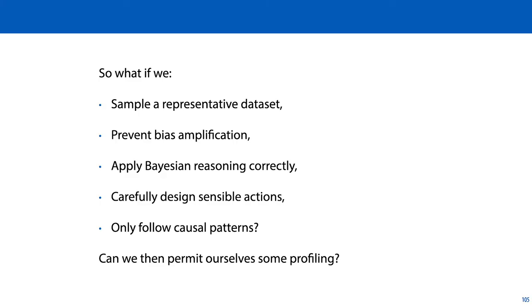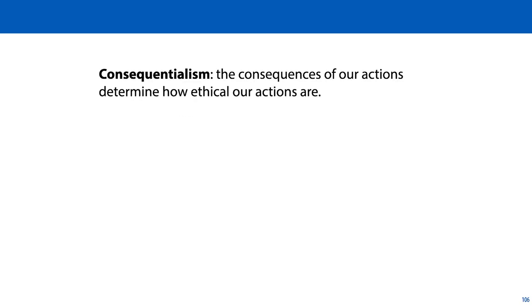So let's take one final look at our question, including everything we've learned so far. Say we somehow get a representative data set, which is difficult. We somehow prevent bias amplification, which may be impossible. We apply Bayesian reasoning correctly, which is possible. And we carefully design sensible actions based on some quantification of cost, which is very difficult. And we take care to consider all causal relations to avoid inadvertent costs and feedback loops, which is difficult at best. Imagine a world where we can do all of this and get it right. Are we then justified in applying profiling? What we have taken so far is a purely consequentialist view. The consequences of our actions are what matters — the more positive those consequences, the more ethical the system, and vice versa.